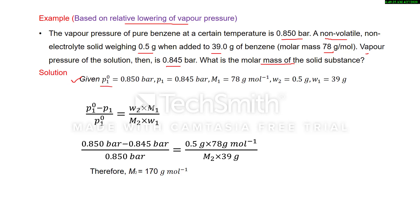The vapor pressure of pure solvent p1° is given, the vapor pressure of solution p1 is given, M1 (molar mass of solvent) is given, w2 (mass of solute) is given, and w1 (mass of solvent) is given. Now use the relative lowering of vapor pressure formula, put in the values of p1°, p1, and all other quantities, and we will get the molar mass as 170 gram per mole.